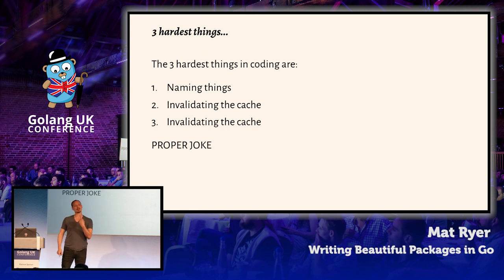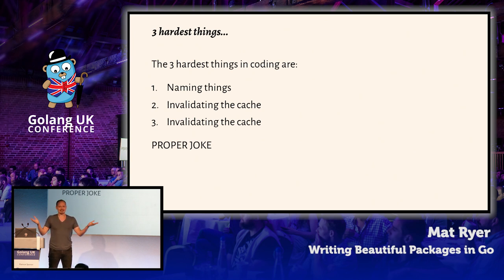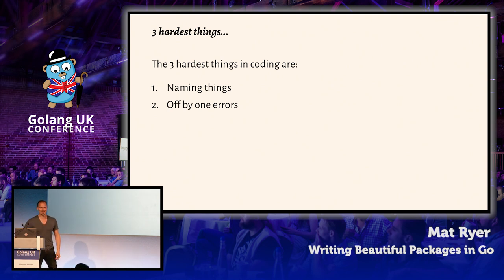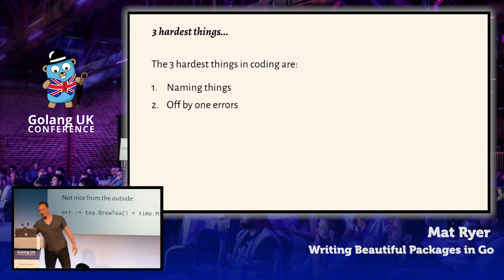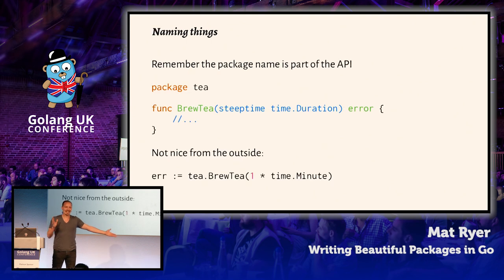The three hardest things in coding are naming things, invalidating the cache, and invalidating the cache. And the three hardest things are naming things and off-by-one errors. In both of these jokes, you'll notice that number one in both cases is naming things, and that is kind of key.